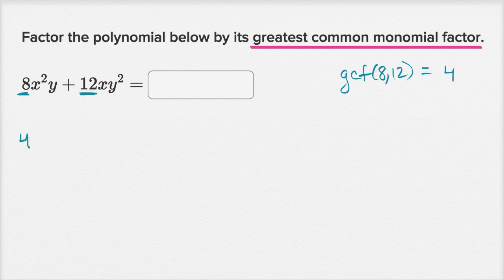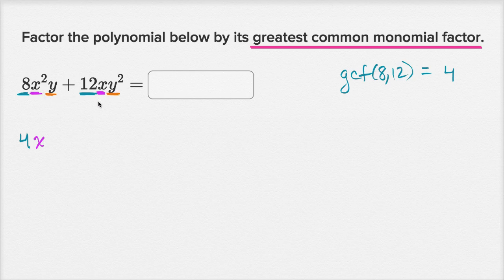I'll put a 4 here. Now we can move on to the powers of x. We have x² and x. The largest power of x that divides into both x² and x is just x. x² is clearly divisible by x, and x is divisible by x. Then for the y's, we have y and y². The largest power of y divisible into both is just y. So 4xy is the greatest common monomial factor.